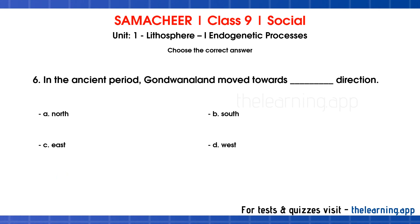Sixth question — in the ancient period, Gondwana land moved towards dash direction. Options: A North, B South, C East, D West. Correct answer is option A: North. In the ancient period, the world's seven continents were once part of a landmass. Gondwana land consisted of Africa, Australia, Antarctica, South America, India, and the Indian Plate.